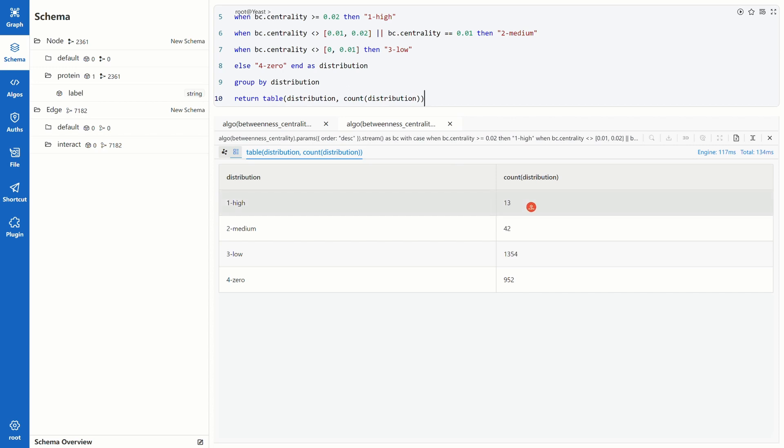13 proteins are of high betweenness centrality. 42 median, 1354 low, and 952 zero. Actually, we can add another column to see the percentage of each level. Divide count distribution into the total number of nodes. 2361. Run it again. Here we go. More than 97% of the proteins are of low or even zero betweenness centrality.